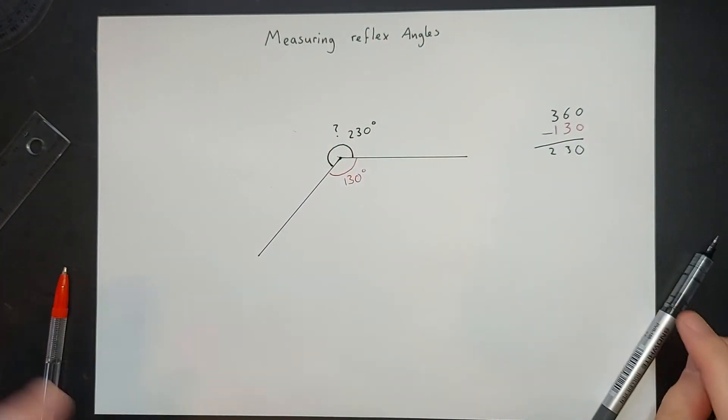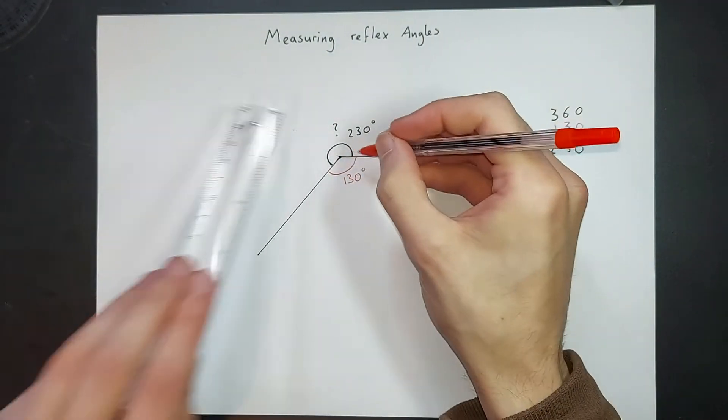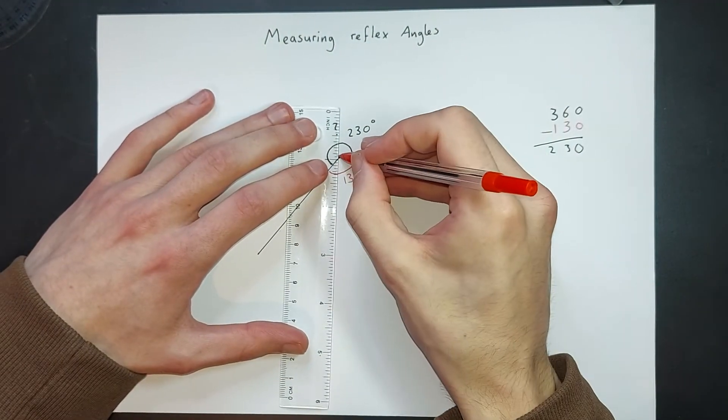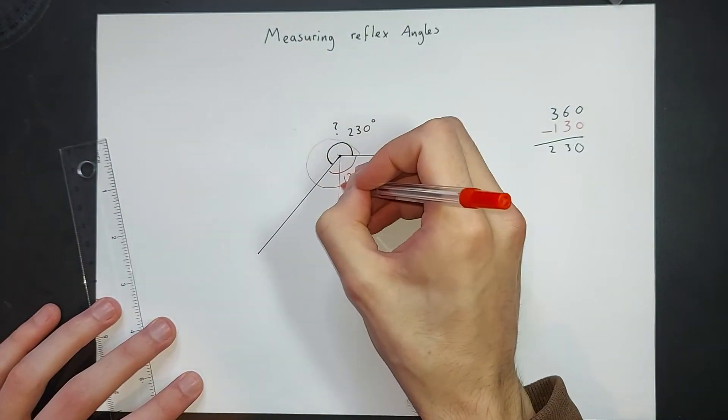Let's just see if our answer is reasonable. Well, if we were to turn 270, that would be to there.